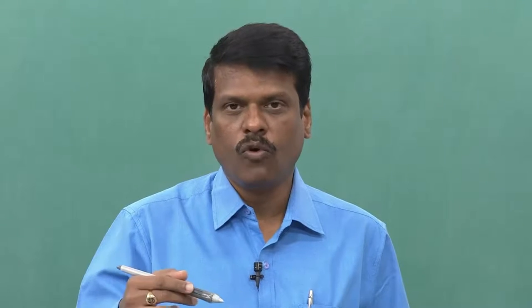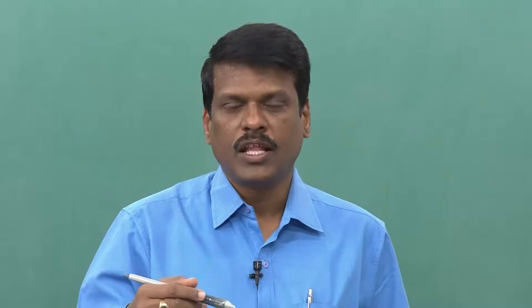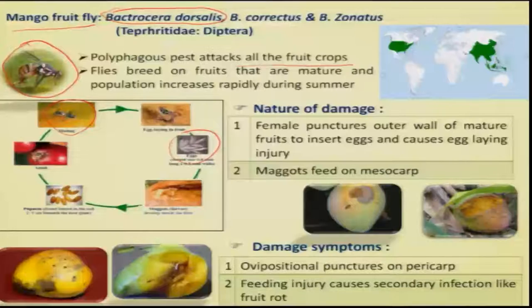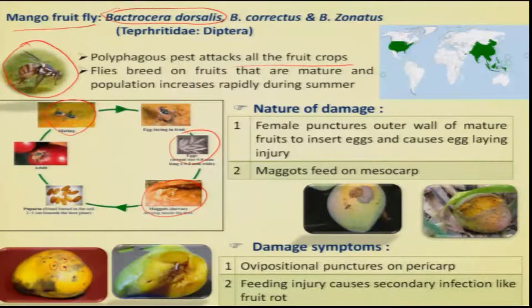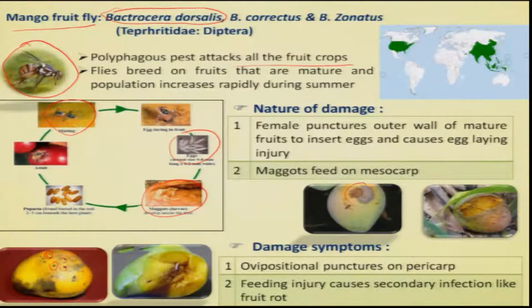But once such fruits go for export and the maggots are detected, the whole consignment will be rejected. Once the maggots complete their stage, they come out of the fruit through small exit holes, drop to the ground, and pupate in the soil. This exit hole leads to secondary fungal infection, causing rotting and fruit drop.